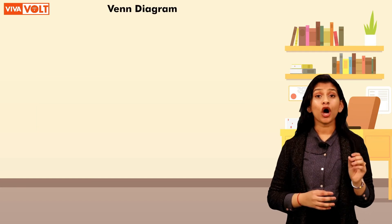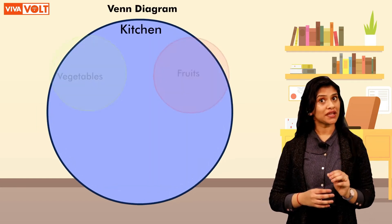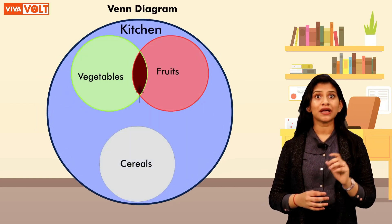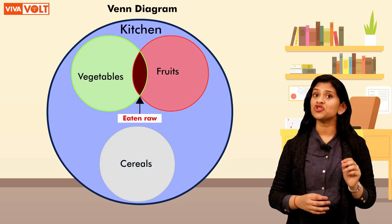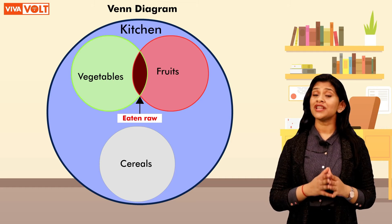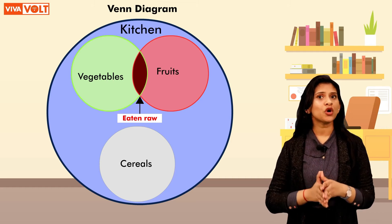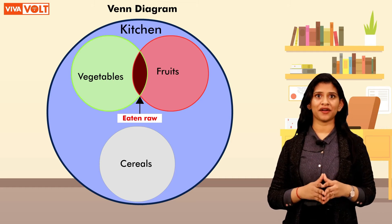So, we can draw a Venn diagram which shows the things in the kitchen that can be eaten raw. Now, let's learn how to draw a Venn diagram.